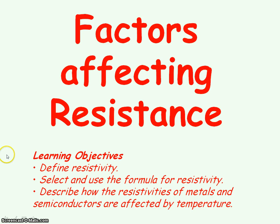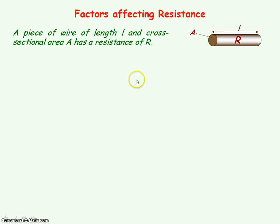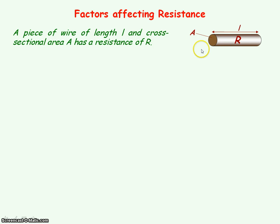We're going to be looking at the factors that affect resistance and hence resistivity. First we're going to consider a piece of wire which has length L and cross-sectional area A, and it has a resistance R.